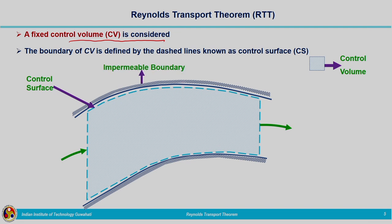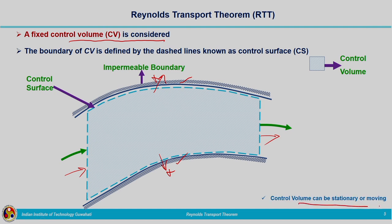Looking at the figure, the top boundary and the bottom boundary are both impermeable, so water flow will not take place through these boundaries. Water flow will take place from the left-hand boundary to the right-hand side. The control volume can be stationary or moving; here in our study we will be considering a stationary control volume.